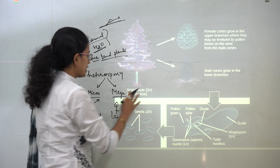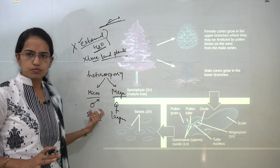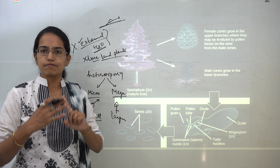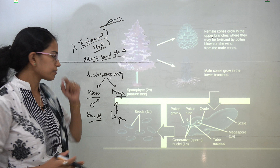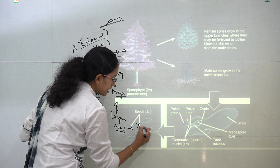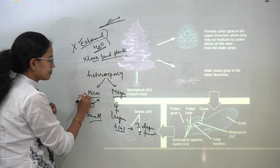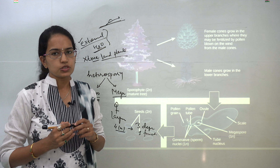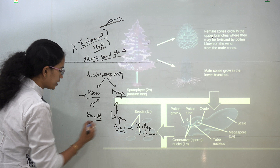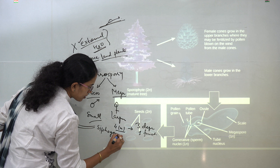Under the sporophytes, as we said, you have microsporangia and megasporangia. Microsporangia are usually smaller in size and they are haploid. Both of these are haploid and when they fuse it forms a diploid zygote. Under megasporangia, four haploid cells are formed, of which three degenerate and one remains functional. Similarly, under microsporangia one remains functional, and finally a pollen tube is formed through which fertilization occurs — a process known as siphonogamy.